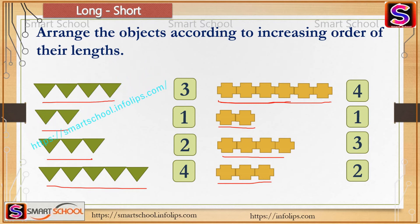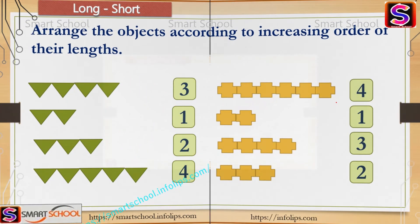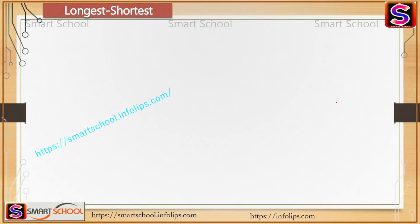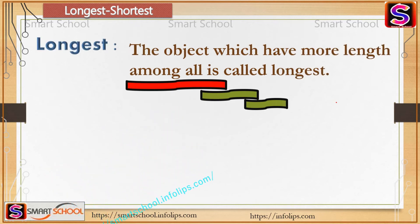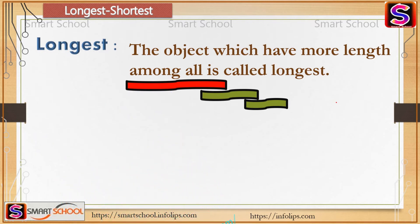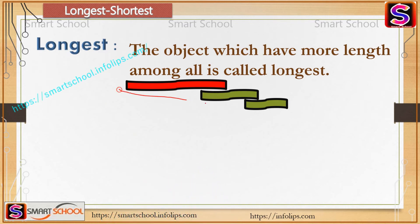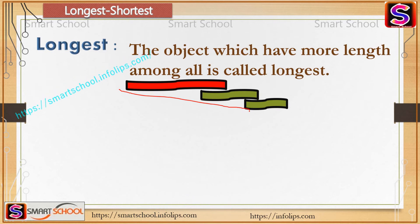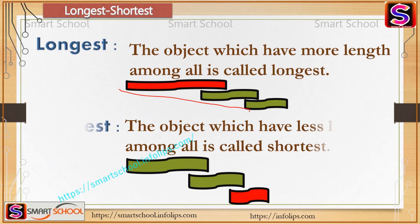Now we will see longest and shortest. Longest means when we say longer and shorter, we are comparing only two objects. But when we compare more than two objects, we say longest. The object which has more length among all is called longest — at least three or more objects should be there.